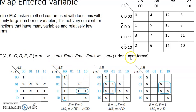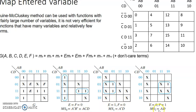Next, consider e=1 and f=0. Mark all the main minterms and don't cares as don't cares, and write 1 only in the locations of e, then do the grouping. These four in one group give ā·d. Then when e=0 and f=1, write 1 only in the f locations, making four in one group, giving a·d.